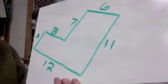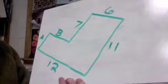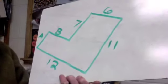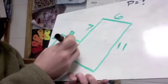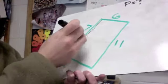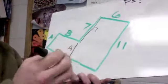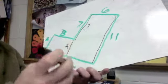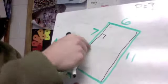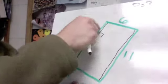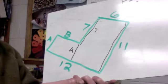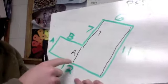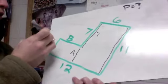The perimeter is the distance around the outside. We don't have all the sides — we're missing this side and this side. Let's start with A. We know A is from here to here, and from here to here is 7. This whole part is 11, and 11 is the same as whatever this whole length is. So we need 7 plus something to equal 11 — 7 plus 4 is 11, so A is 4.